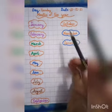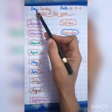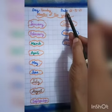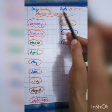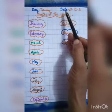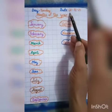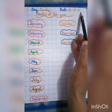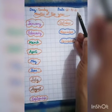First of all you have to write down day and date on the top of your notebook. Today is Tuesday and the date is 21st of December 2021.